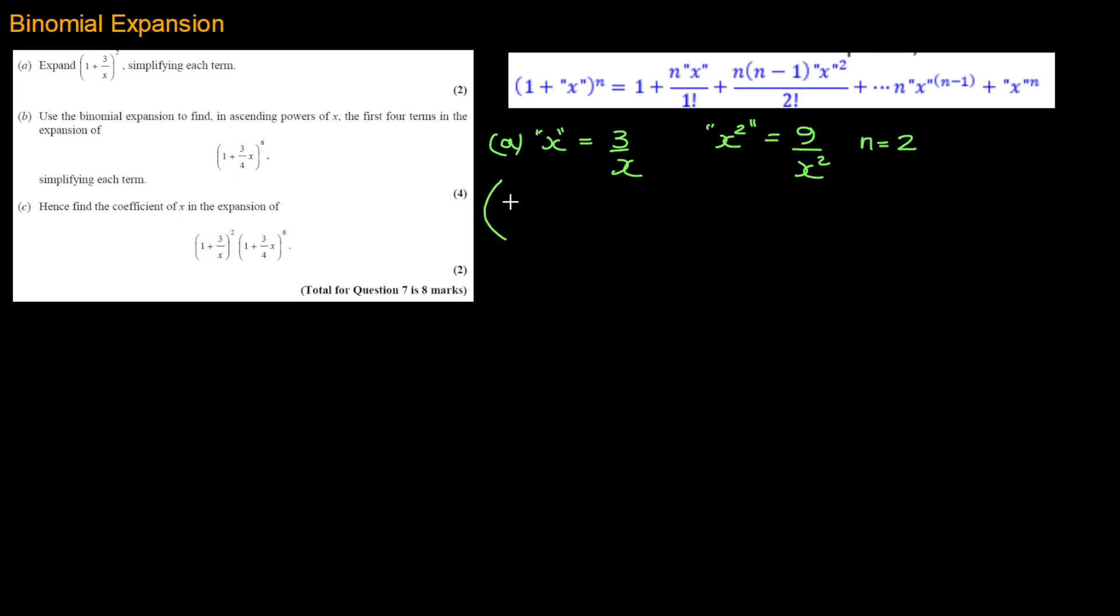I can say that (1 plus 3 over x) squared is equal to, using the formula, 1 plus 2 times x, which is 3 over x divided by 1, which I'm not going to bother with, plus 2 times 1, and then x squared, well we've done this one already, 9 over x squared, divided by 2 factorial is 2 times 1, which is 2.